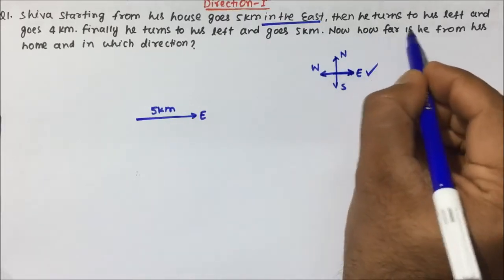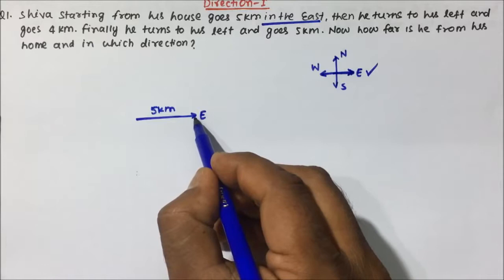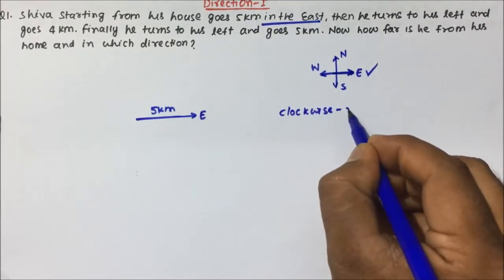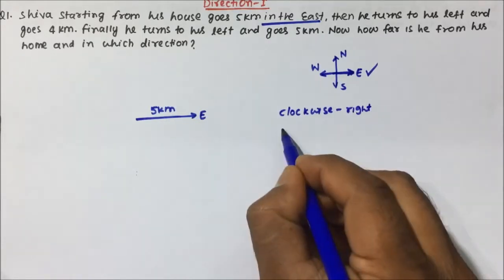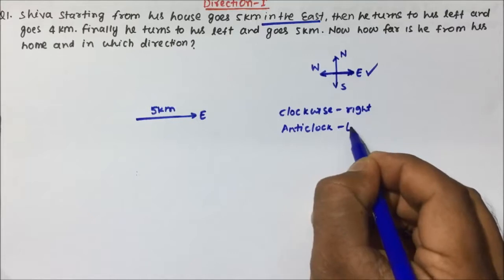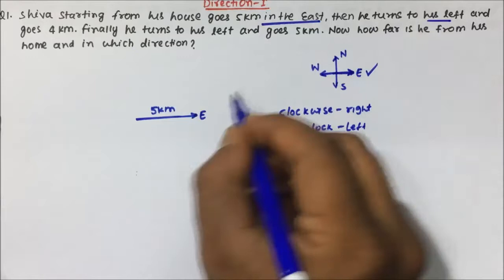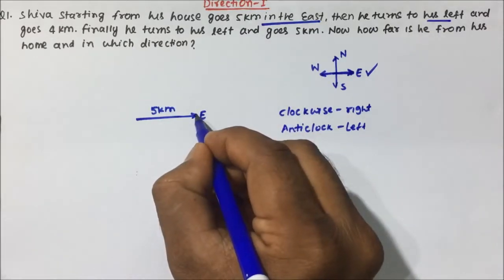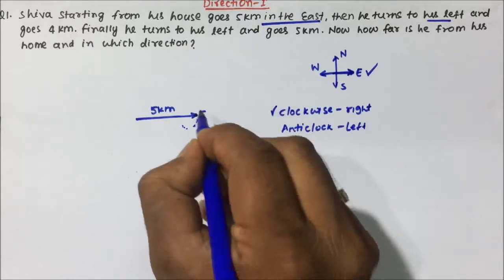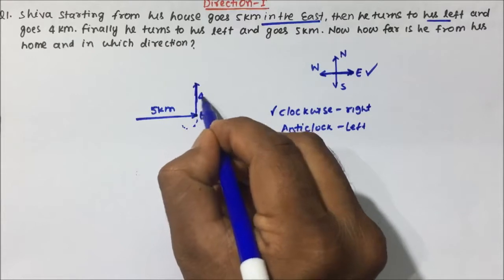Then he turns to his left and goes 4 kilometers. Now, how to decide right and left: if the movement is in clockwise direction then it will be right, and if the movement is in anti-clockwise direction then it will be left. So put your pen point here — he turns to his left, so this will be anti-clockwise, which means left.